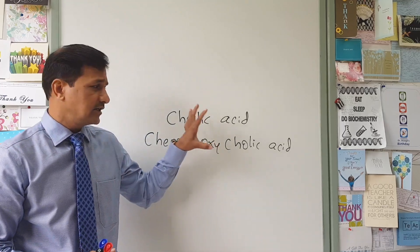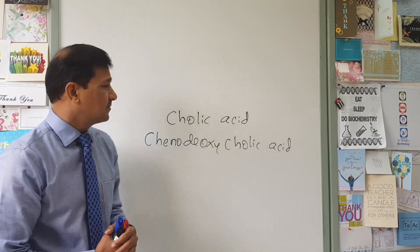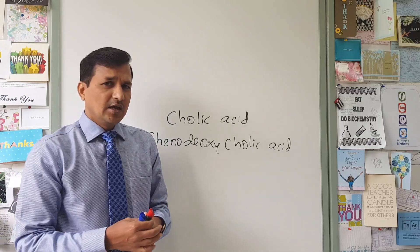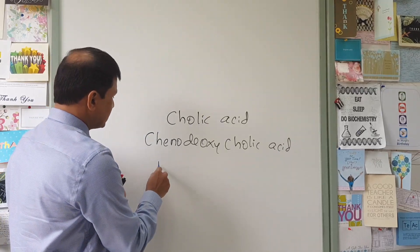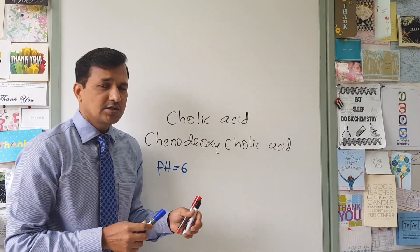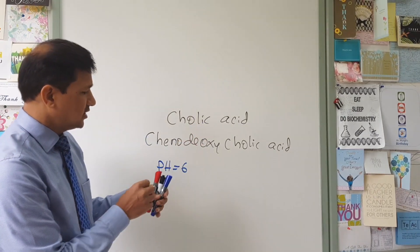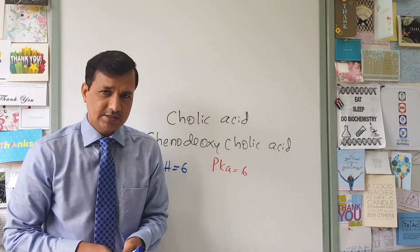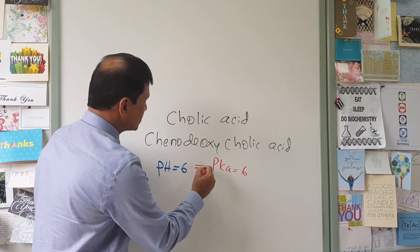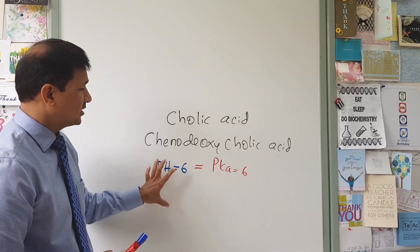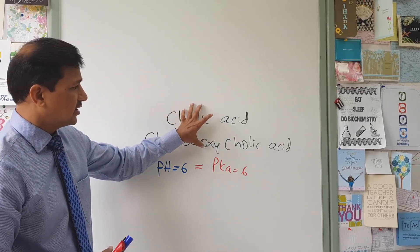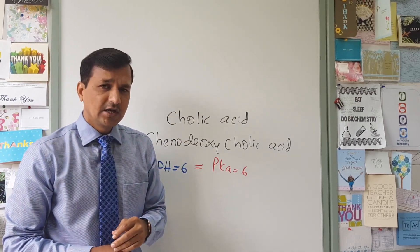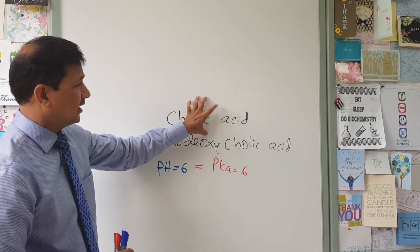However, that usually does not happen directly. The reason is that if Cholic acid and Chenodeoxycholic acid are released into the duodenum as bile acids, the duodenal pH is around 6, and the pKa of these two molecules is also 6. When pH equals pKa, there is 50% protonation and 50% deprotonation — meaning 50% of Cholic acid is in the colate form and 50% remains as Cholic acid itself.